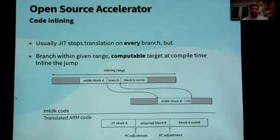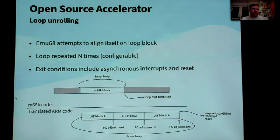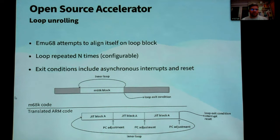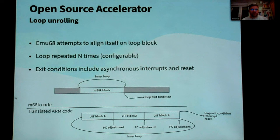The last important optimization is loop unrolling. Mo68 attempts to align itself on the beginning of the loop, and the loop can be repeated several times — this is a runtime configuration option. If you have a small, tight loop in the M68K code, the loop can be repeated several times just to avoid branching. The inner loop jump back to the beginning is performed without leaving the translated code block; the corresponding instructions are added to the translated ARM code directly.